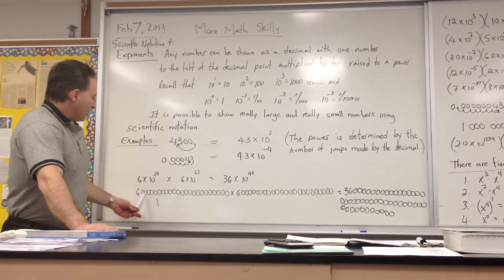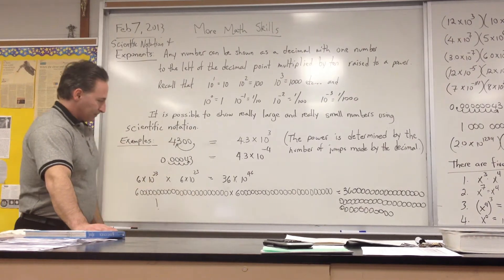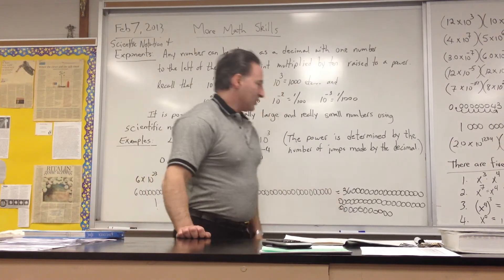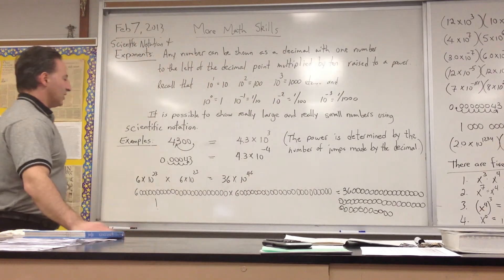If I was to do that using the conventional way, here's 6 times 10 to the 23 times the same number, and here's the answer. So it's very cumbersome to write it all out that way.